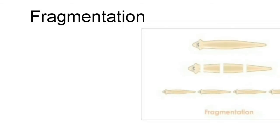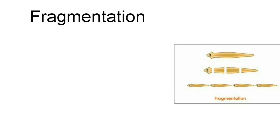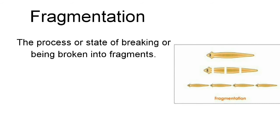Fragmentation is also a mode of asexual reproduction. The word itself indicates breaking into parts — fragment means into parts. It is the process or state of breaking or being broken into fragments, also known as splitting. Here, what the parent does is divide itself into several parts.